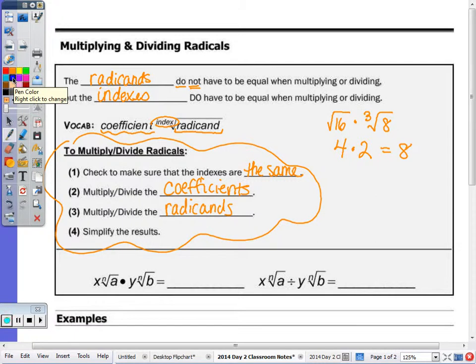Algebraically, so I have my coefficients x and y. First thing I would do is multiply them, so I get xy. We keep the index of n, and then multiply the radicands, so that would be a times b.